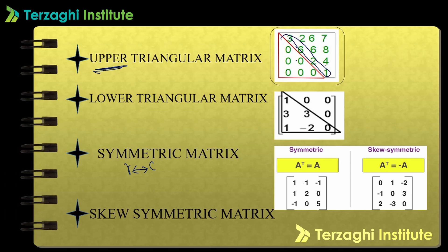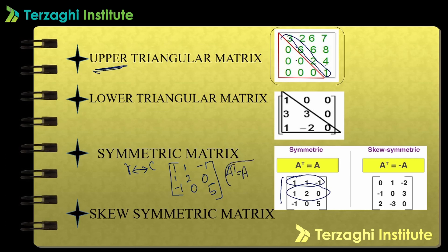For example, consider the matrix with elements 1, 1, minus 1 in the first row; 1, 2, 0 in the second row; minus 1, 0, 5 in the third row. After transposing — interchanging rows and columns — we get the same matrix: 1, 1, minus 1; 1, 2, 0; minus 1, 0, 5. Since A transpose equals A, this is a symmetric matrix.